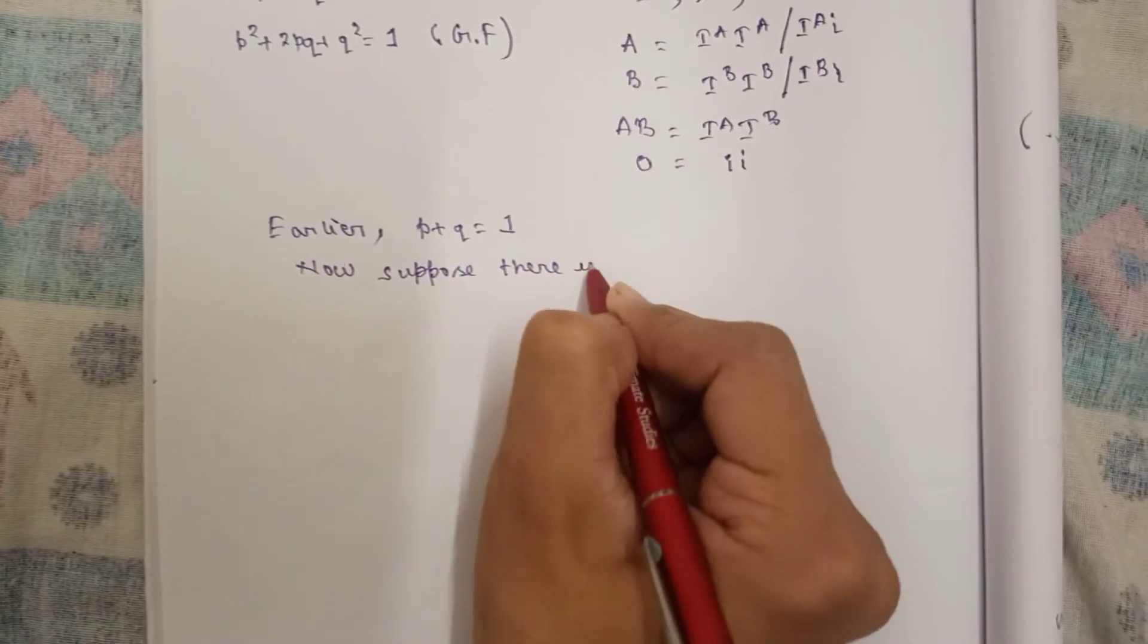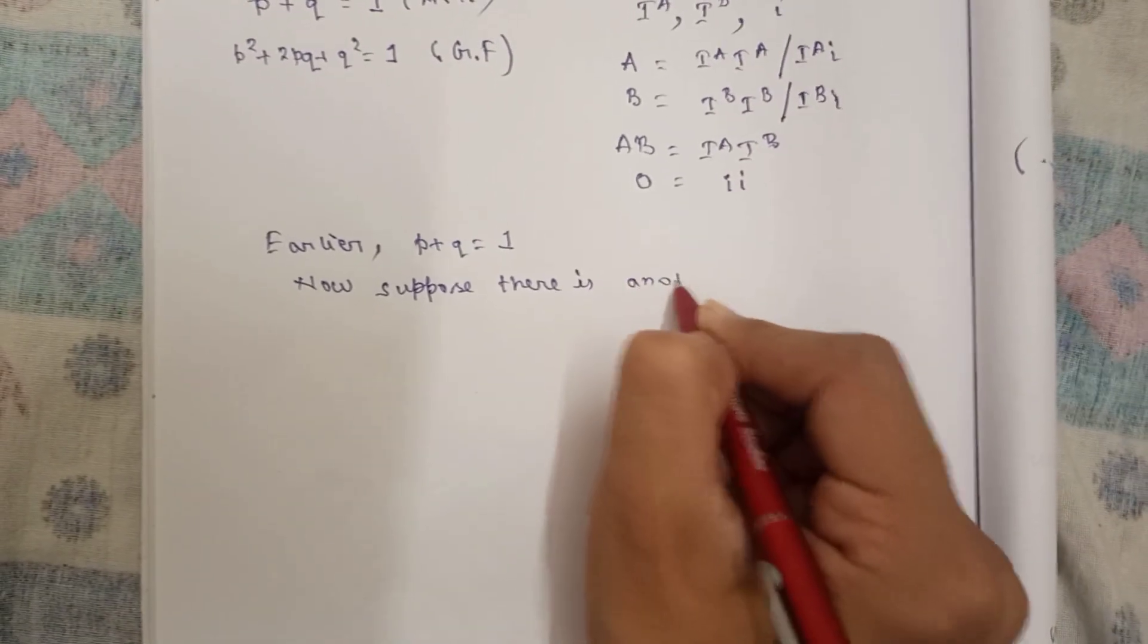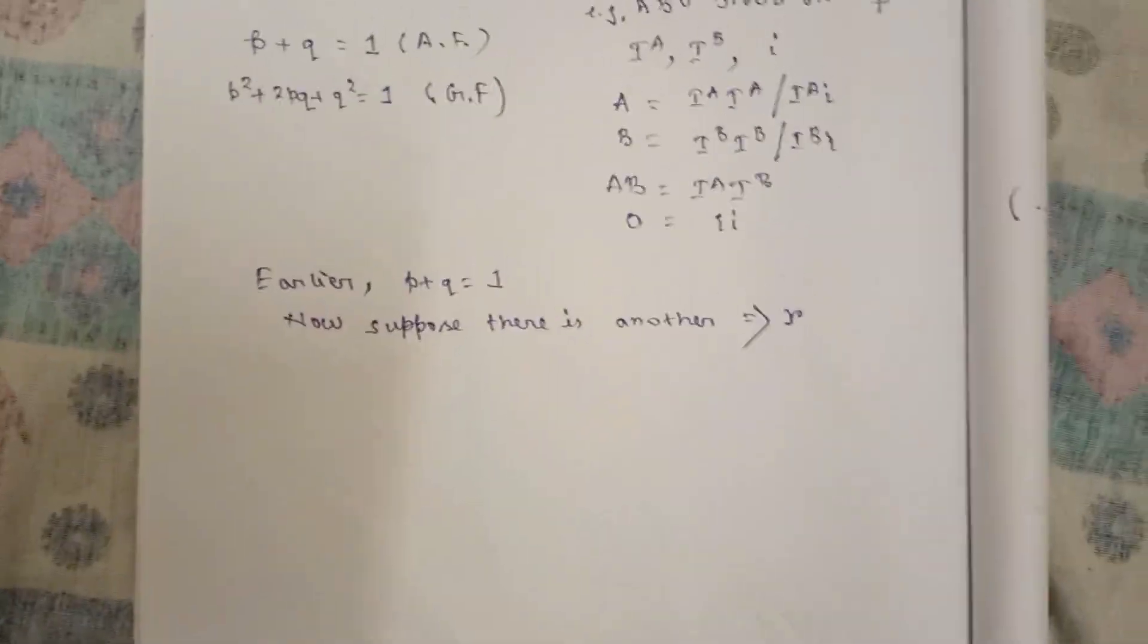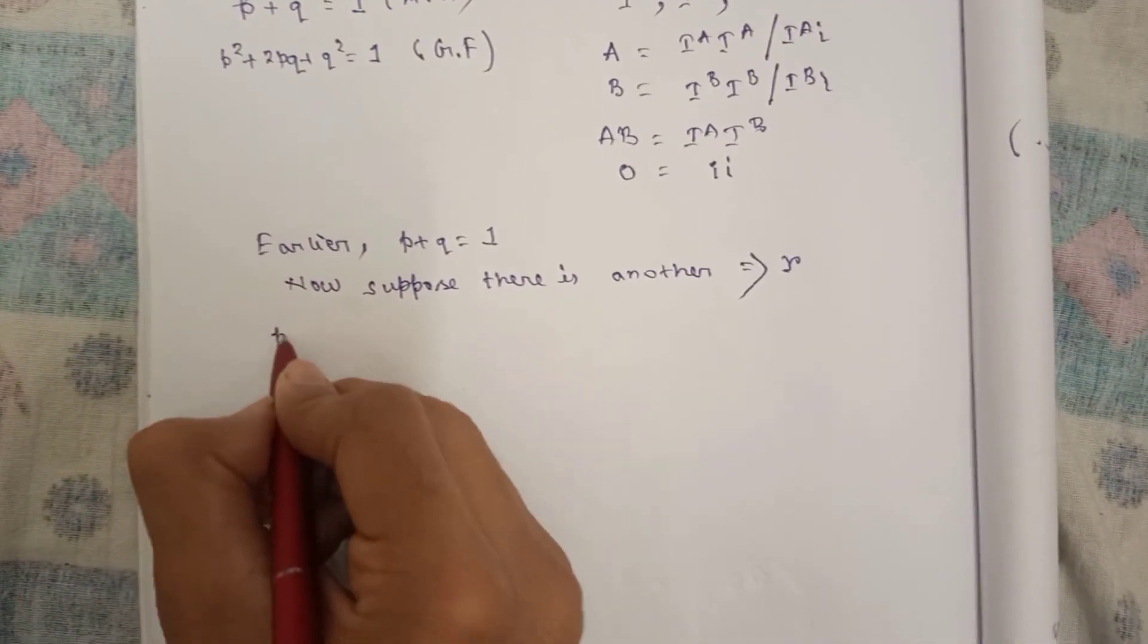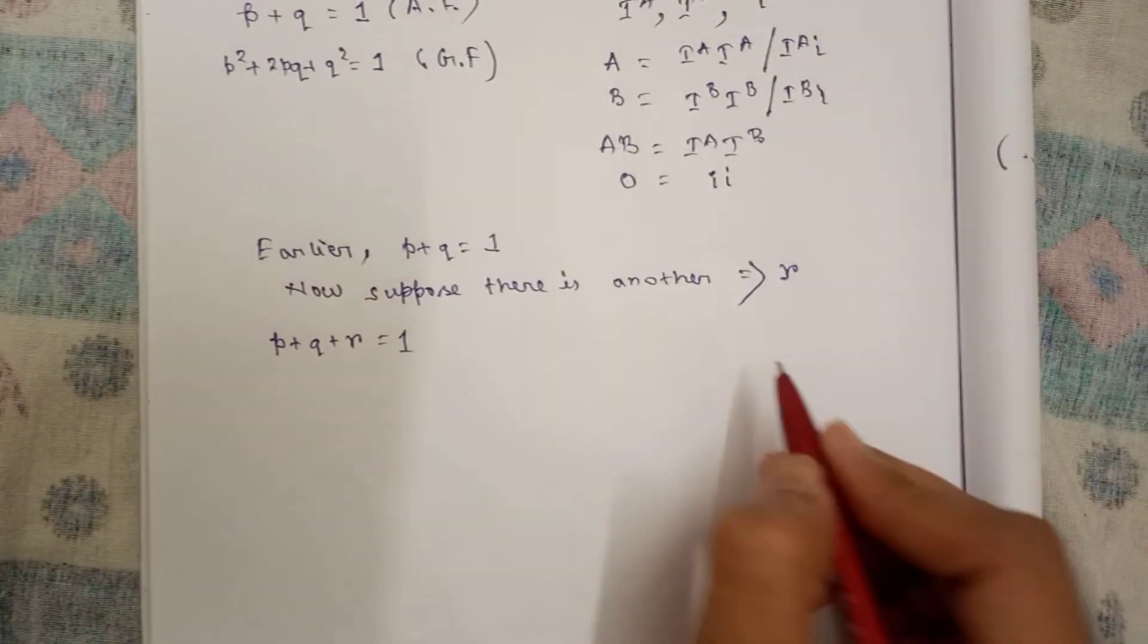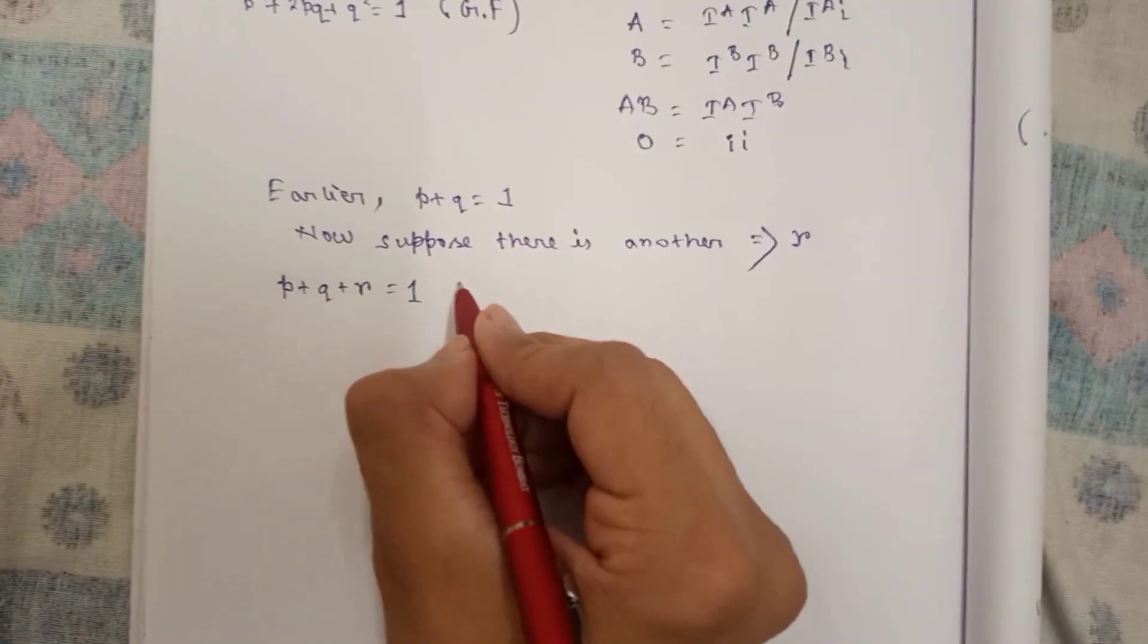Now suppose there is another, that is r. So now we will write it as p plus q plus r equal to one if the population is in Hardy-Weinberg equilibrium.